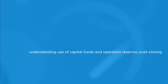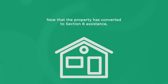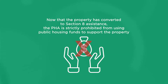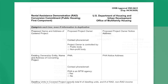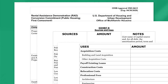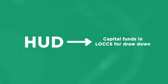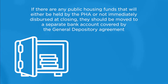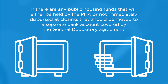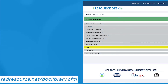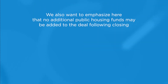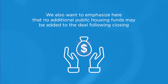Now that the property has converted to Section 8 assistance, the PHA is strictly prohibited from using public housing funds to support the property. All capital funds or operating reserves that were approved in the financing plan must be identified in the sources and uses exhibit to the RAD conversion commitment document. HUD will transfer capital funds in LOX for drawdown. If there are any public housing funds that will either be held by the PHA or not immediately dispersed at closing, they should be moved to a separate bank account covered by the General Depository Agreement. No additional public housing funds may be added to the deal following closing.